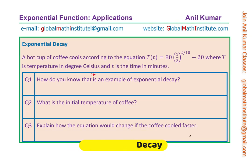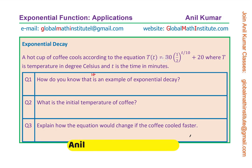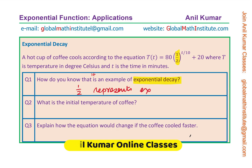We are going to take the first three questions. The first part is: how do you know that it is an example of exponential decay? In the given equation, capital T gives the temperature at any time represented by small t: 80 times one-half to the power of t over 10, plus 20. The factor one-half is what is multiplied each time, and that factor results in exponential decay. We know it is exponential decay because every time it gets multiplied by one-half — the factor one-half represents exponential decay.